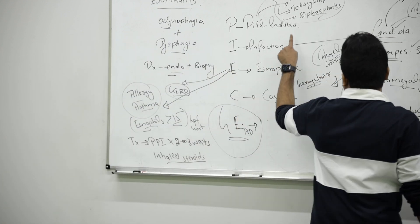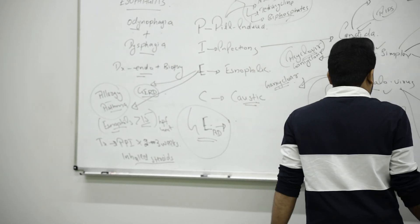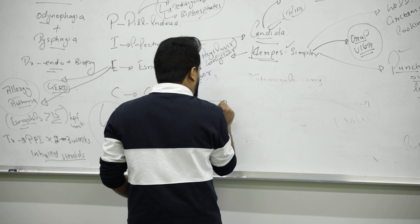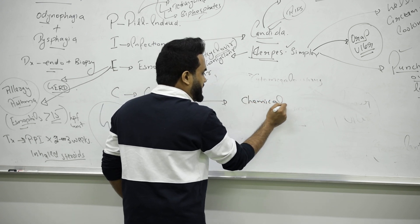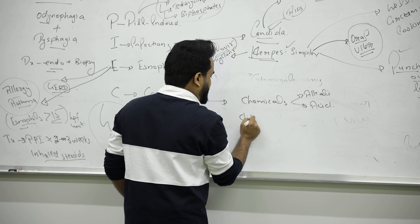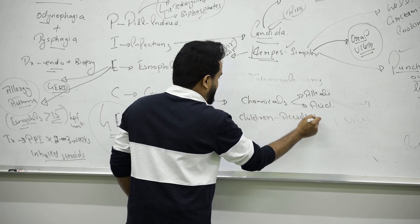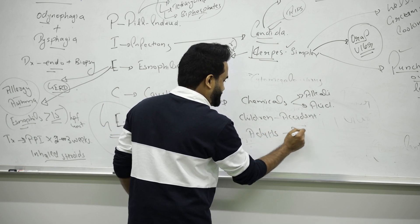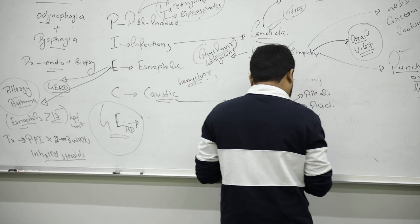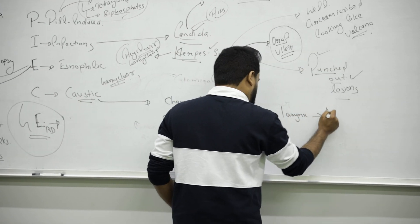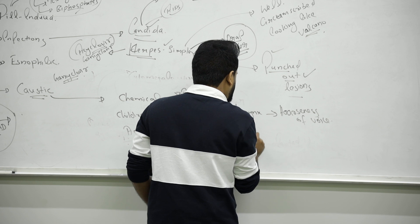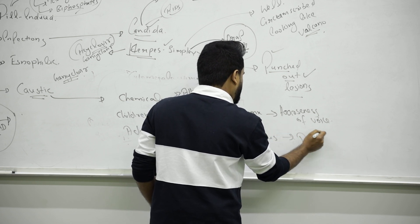That's all about esophagitis because of pill-induced, infections, eosinophilic. Next one is about caustic, very important. Caustic means because of chemicals - patient taking chemicals like alkali or acid. Remember in children it can be an accident. In adults, someone wants to suicide can be the reason. They will cause burns. If you have larynx burns you will have hoarseness of voice. If esophagus is affected you will have drooling and stridor you can hear.